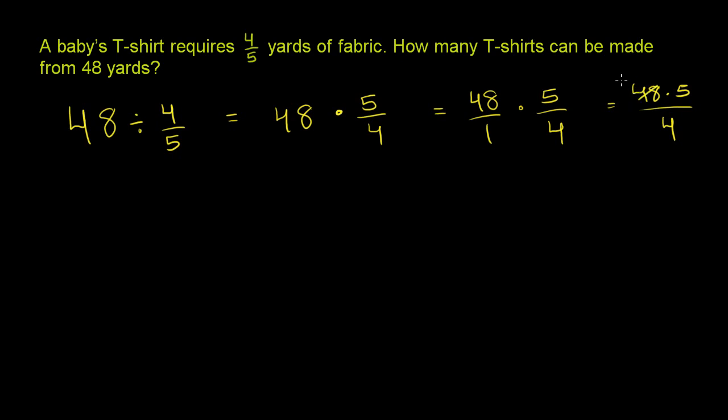Well, we could divide 48 by 4 and we will get 12. And whatever we did to the numerator, we have to do the denominator. So if we divide 4 by 4, we get 1. So then we're left with 12 times 5, which is equal to 60.